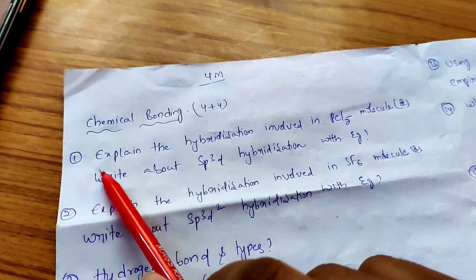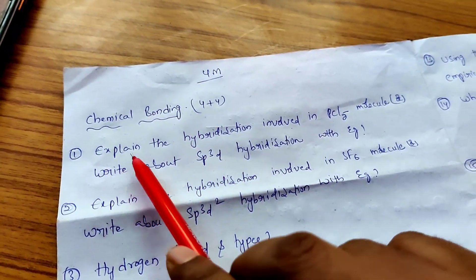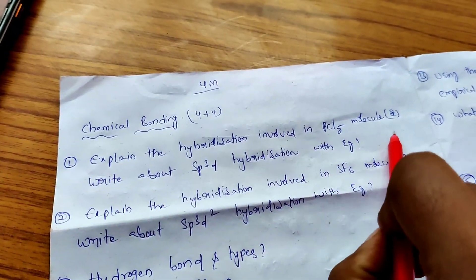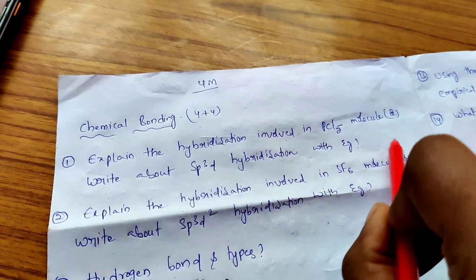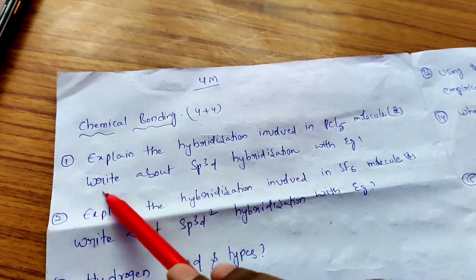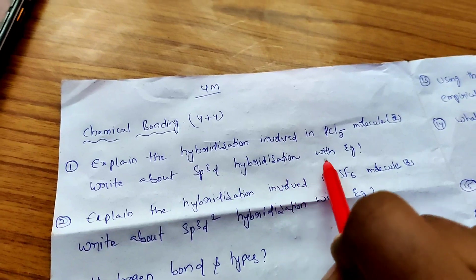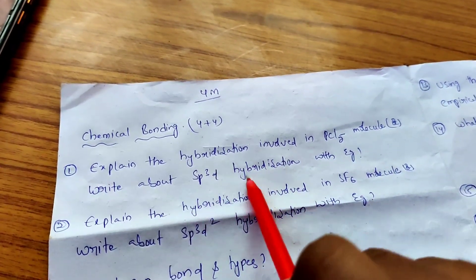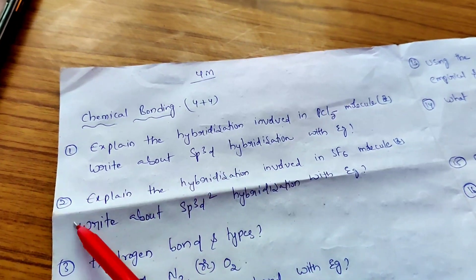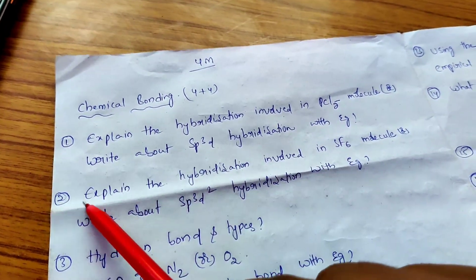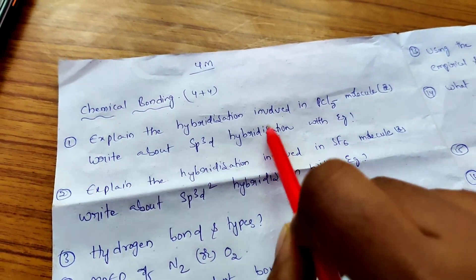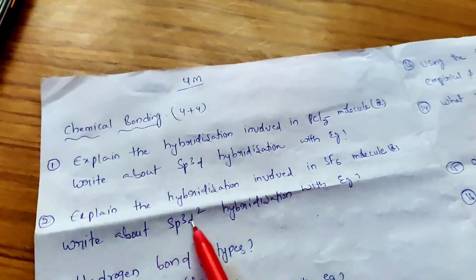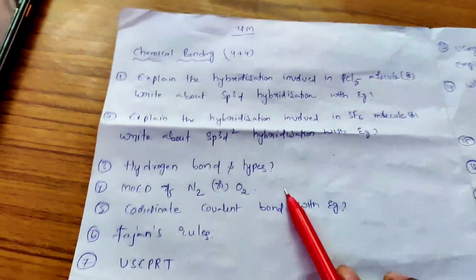Next important questions from Chemical Bonding: First question — explain the hybridization involved in the PCl5 molecule, or write about SP3D hybridization with an example. The answer is essentially the same for both. Second question — explain the hybridization involved in SF6 molecule, or write about SP3D2 hybridization with an example.